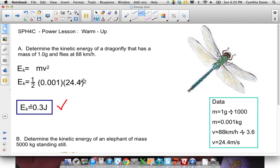And the little thing doesn't have very much kinetic energy because it's just a dragonfly. So even though it's going really, really fast, it's small, small mass means it's not going to have much energy.